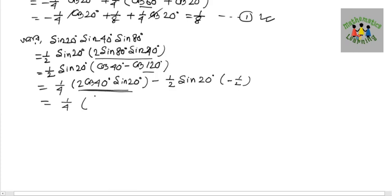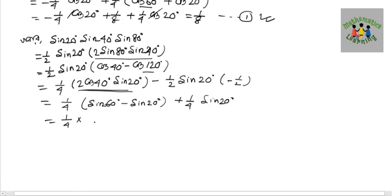We get minus sin(A−B), plus (1/4)sin20°, which equals (1/4) × sin60° × (√3/2), minus (1/4)sin20°, plus (1/4)sin20°. These last two terms cancel, giving us √3/8.